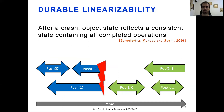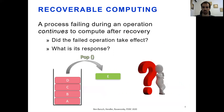Israelevich et al. presented the Durable Linearizability correctness condition for the crash recovery model. After a crash, the state of the object must reflect a history containing all completed operations. A crashed operation may or may not be part of this history. In addition to recovering the state of the object itself, we also want to allow processes to recover and continue their execution. Upon recovery, a process needs to be able to conclude whether its crashed operation took effect and also obtain its response.